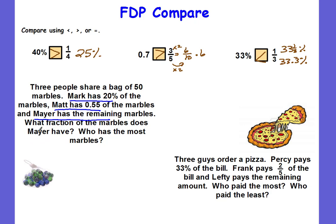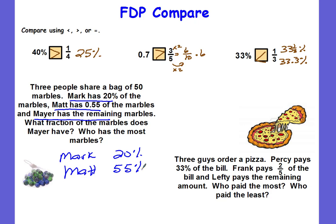Before I figure out the fraction, I'm going to put both of these as percents. Mark has 20 percent. Matt — if I change the decimal fifty-five hundredths to a percent using the decimal-to-percent method — it becomes 55 percent. So in total, how much do Mark and Matt have altogether?